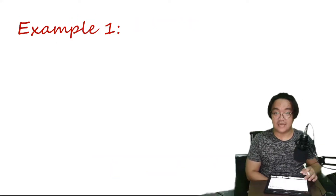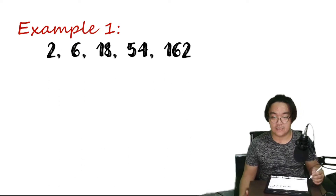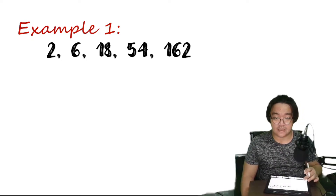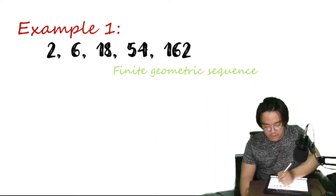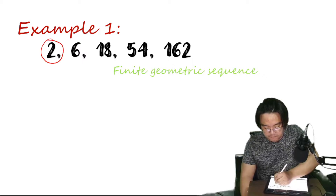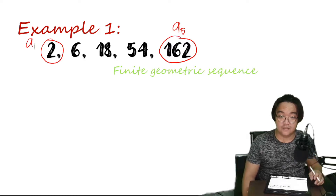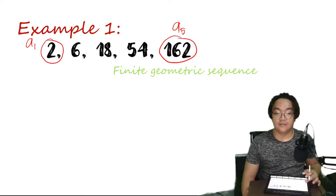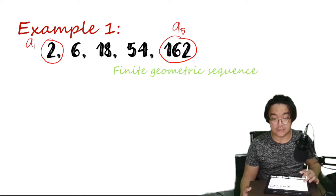So let's have an example. Consider the sequence 2, 6, 18, 54, and 162. We can call this a finite geometric sequence. Why finite? We have here the first term and we have here the fifth term, or we can say the last term. So it's a finite geometric sequence. Each term of this sequence can be obtained by multiplying 3 from the preceding term.